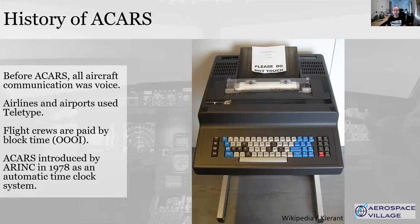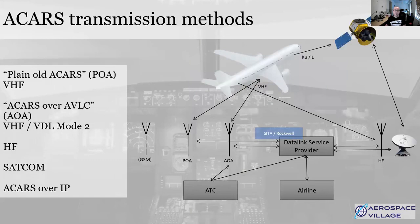Because radio is line of sight only, ARINC — those who developed the standard — built out a network of ground-based transmitters to send, receive and relay those messages around, and this whole concept hasn't really changed much to this day. Plain old ACARS is broadly what it was back in 1978. It uses a VHF radio and network of ground transmitters to send these messages around.